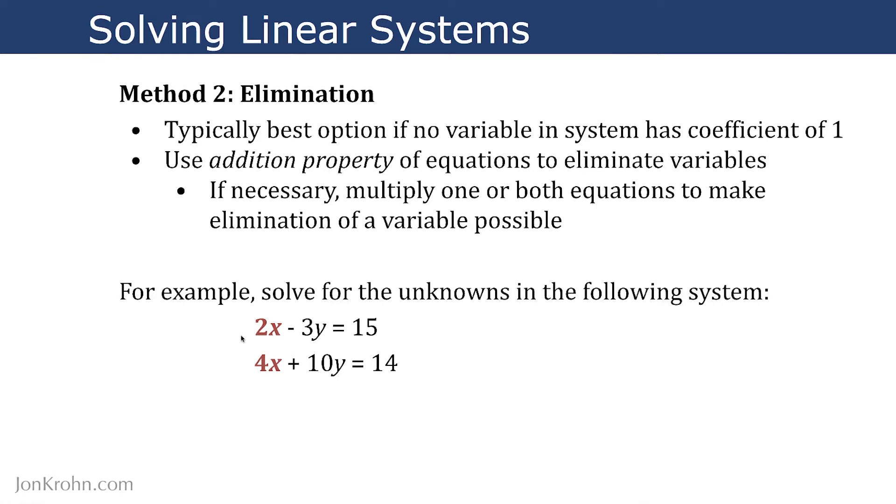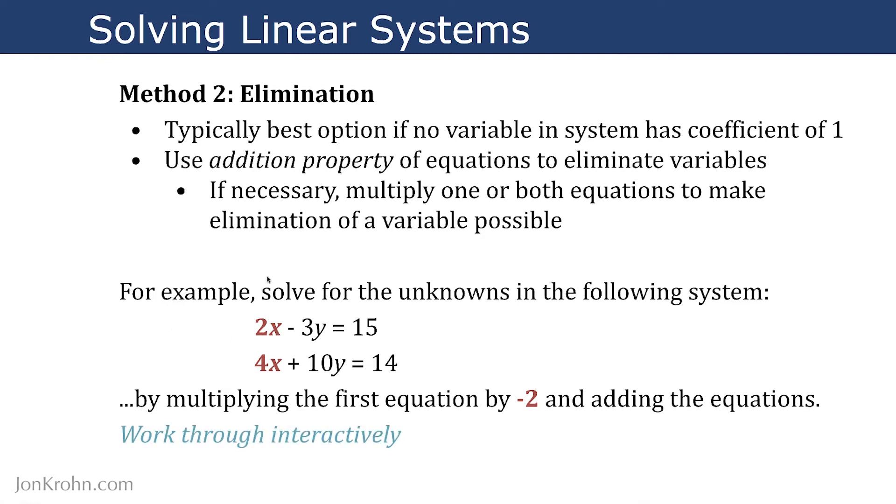We can see here that by multiplying the first equation by negative 2, we'll then have negative 4x as the first term in the first equation. From there, we can use this addition property to isolate and solve for both x and y.